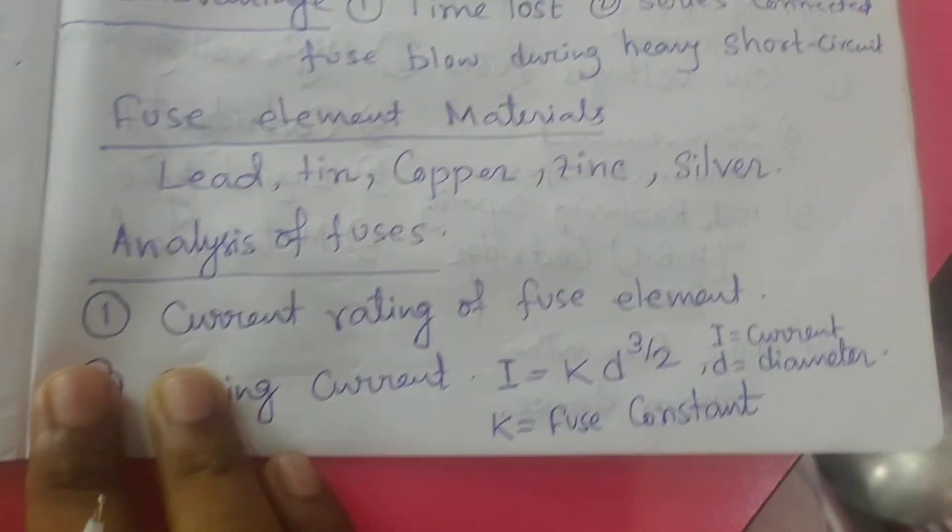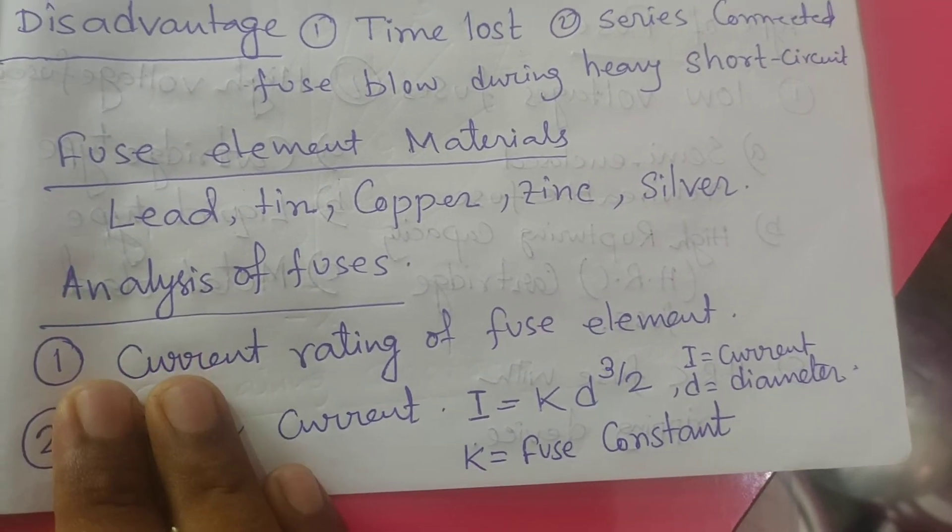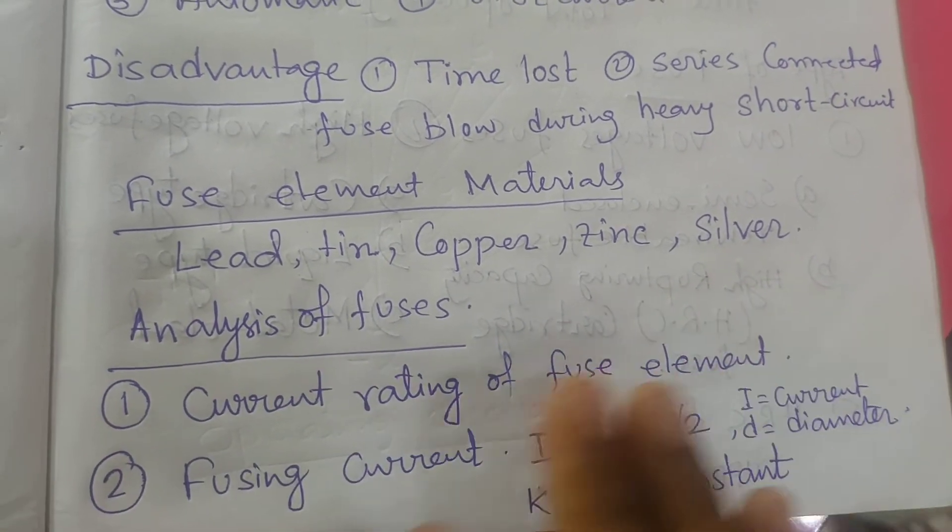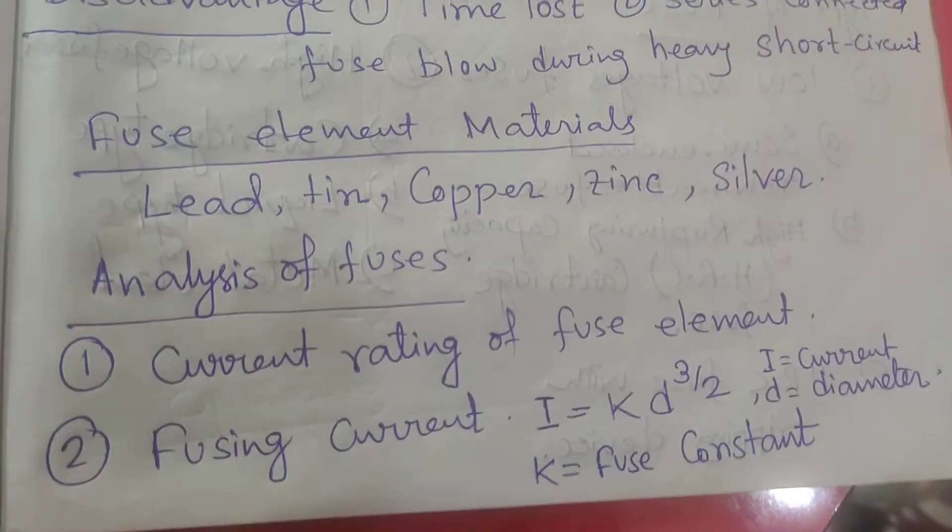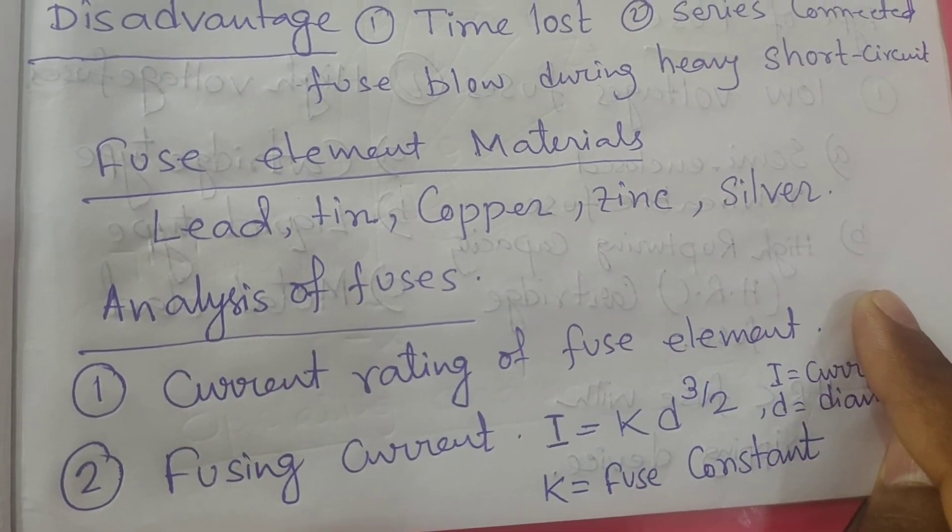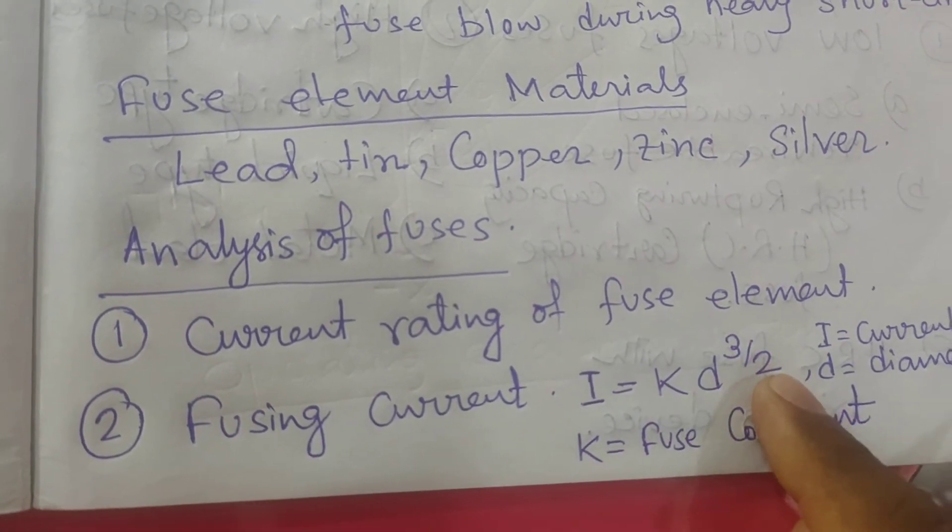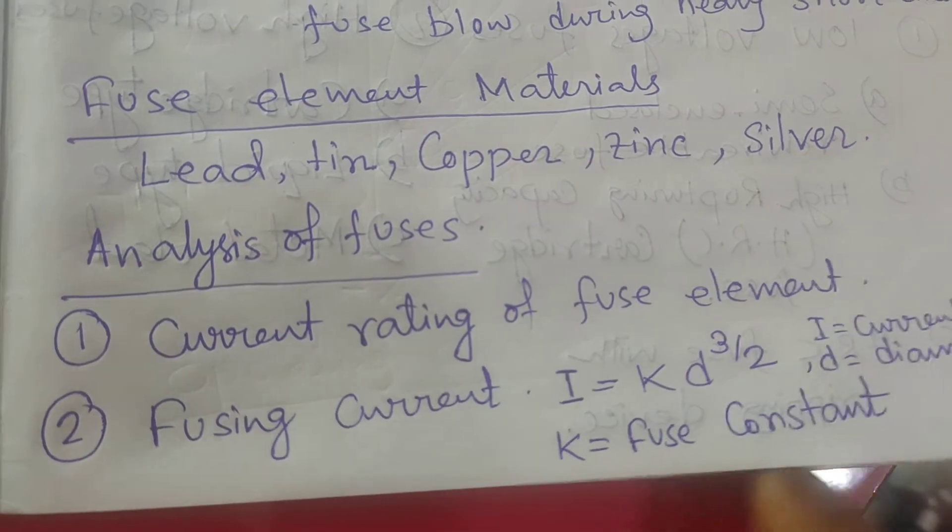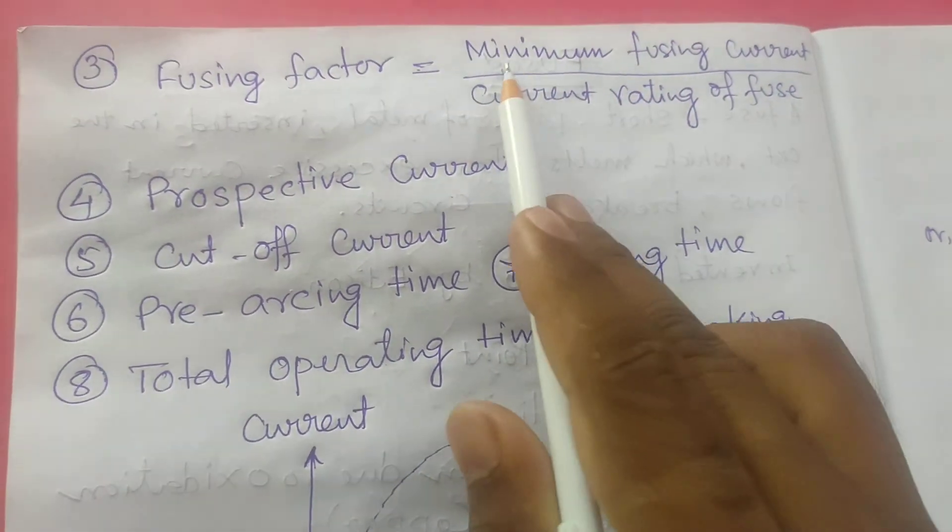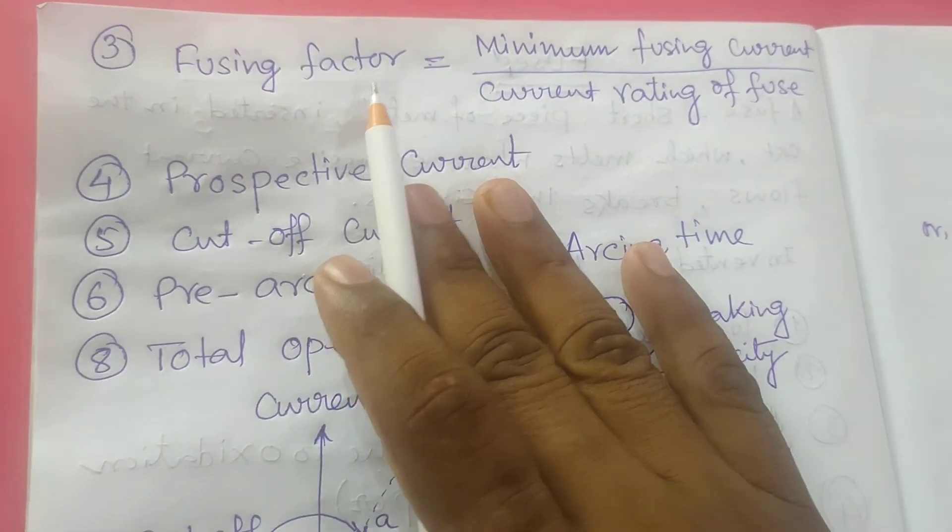Now let's analyze the fuse and what factors and terms are important. First is the current rating of the fuse - what amount of current and load has been connected with your house, industry, factories, or shops. Accordingly, you have to choose your fuse materials. The fusing current: i equal to k d to the power 3 by 2, where i is the current, d is the diameter, and k is the fuse constant. Fusing factor is minimum fusing current divided by the current rating of the fuse.